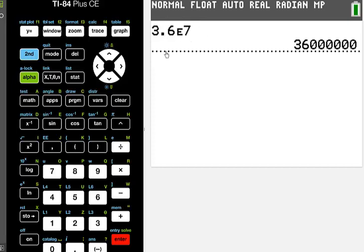But this is the calculator's way of showing 3.6 times 10 to the 7th. Of course, on paper, you never write this. You use the actual scientific notation.